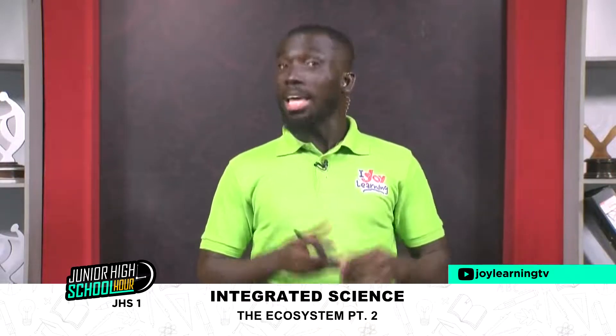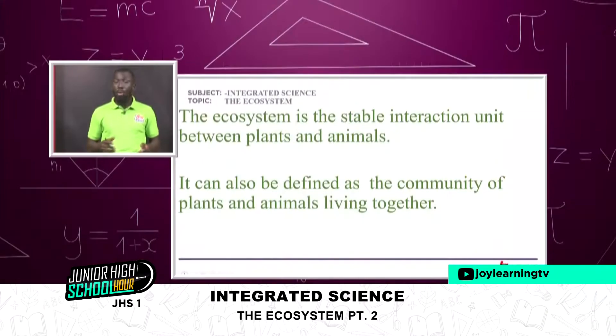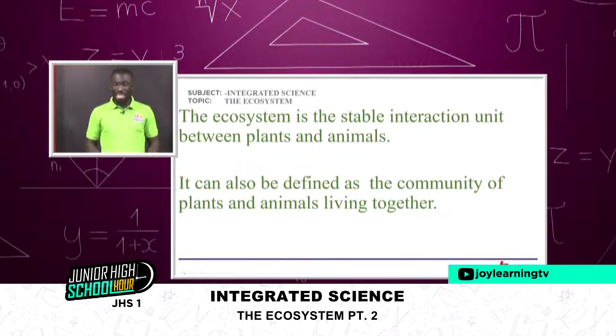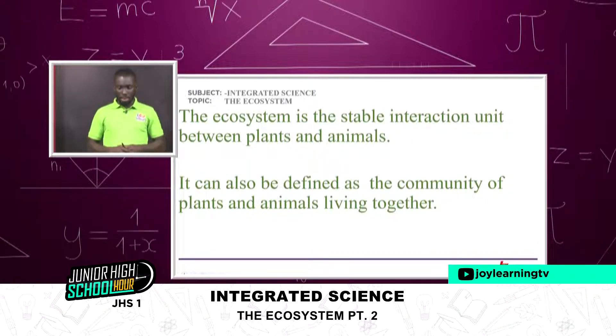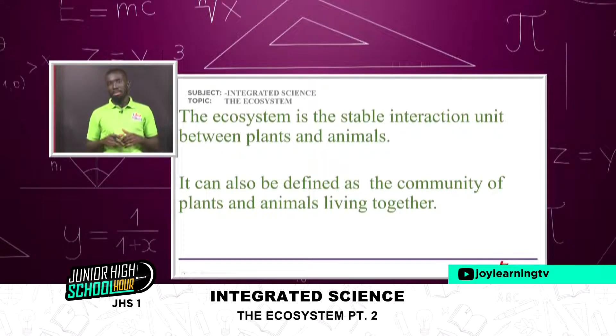The first question I gave you was: what is an ecosystem? An ecosystem is defined as a stable interaction unit between plants and animals. It can also be defined as the community of plants and animals living together. So when you have one community of plants and animals, then an ecosystem is formed.